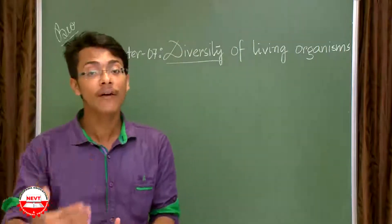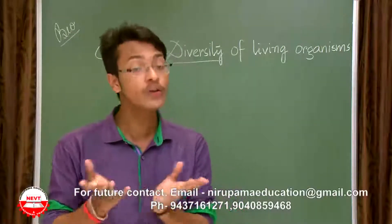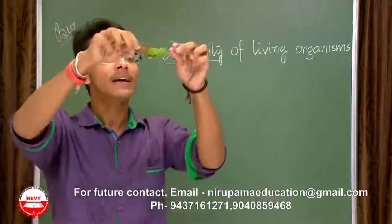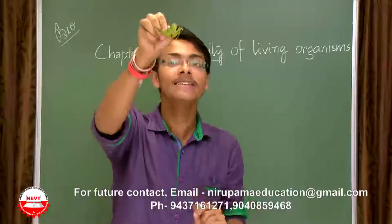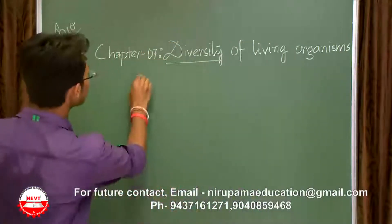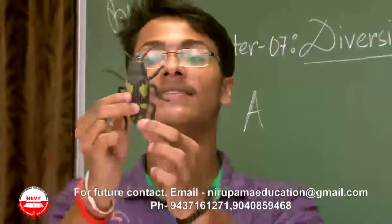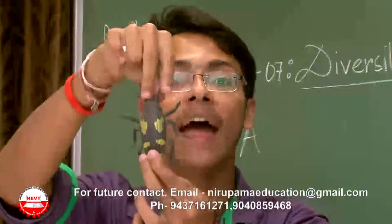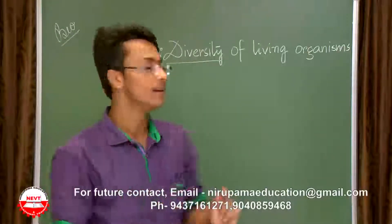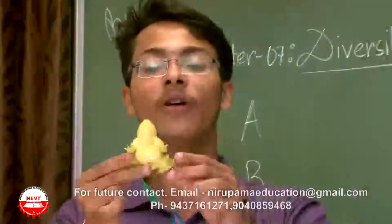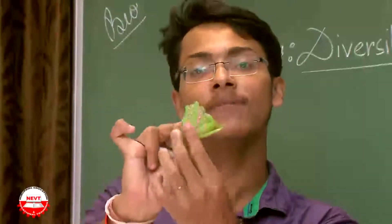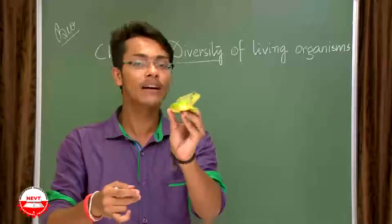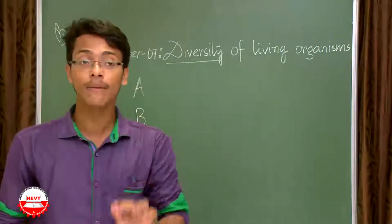Before going to the next part of the chapter, I would like to show you certain models and you yourself can distinguish why I am showing them. This first one — I will not tell you, you will tell me later — let us classify it as A. The second one is a black-coloured organism with six appendages, that is six legs and two antennae — let us name it B. The third one is an animal quite familiar to us — girls are always afraid of its hopping — let us name it C.